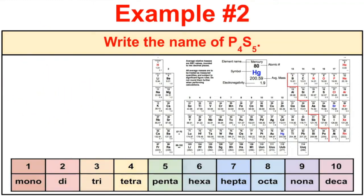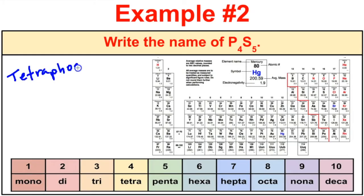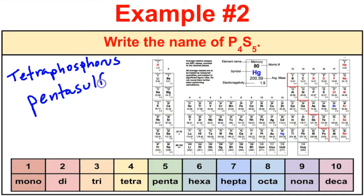Next example: P4S5. We have two non-metals — phosphorus and sulfur. There are 4 phosphorus atoms, and the prefix for 4 is tetra, giving tetraphosphorus. Then there are 5 sulfides, and the prefix for 5 is penta, giving pentasulfide. So the correct name is tetraphosphorus pentasulfide.